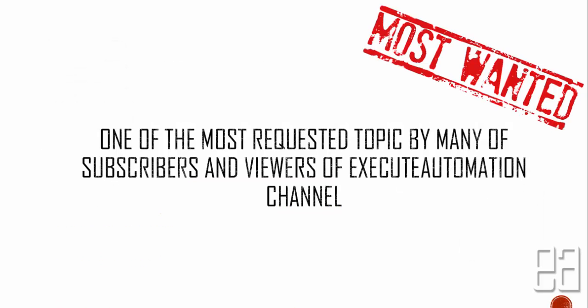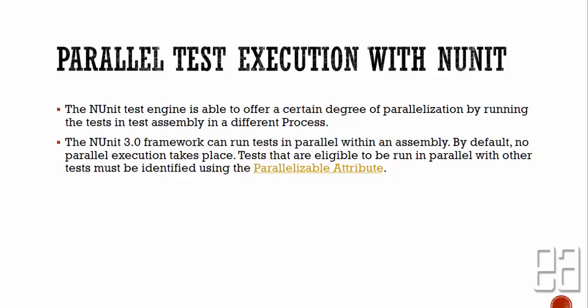This is one of the most requested topics by many subscribers and viewers of the Execute Automation channel. The NUnit test engine is able to offer parallelization by running tests in a test assembly in a different process. NUnit 3.0 can run tests in parallel within an assembly or across multiple assemblies. Tests eligible to run in parallel must be identified using the Parallelizable attribute. Earlier there was PNUnit — parallel NUnit — which was cumbersome to configure, but the Parallelizable attribute makes it very simple.